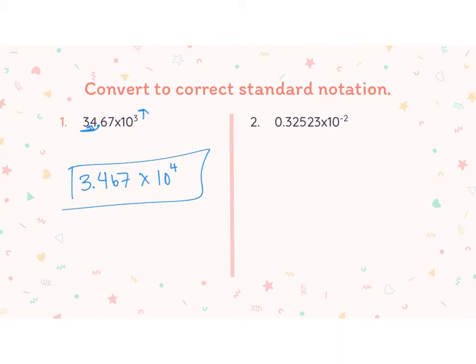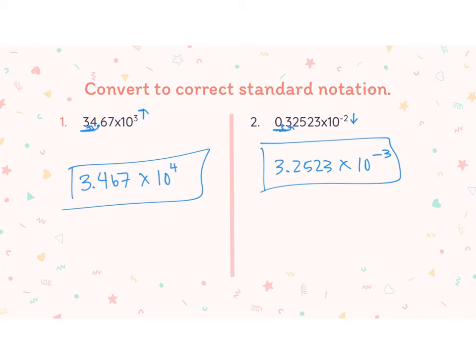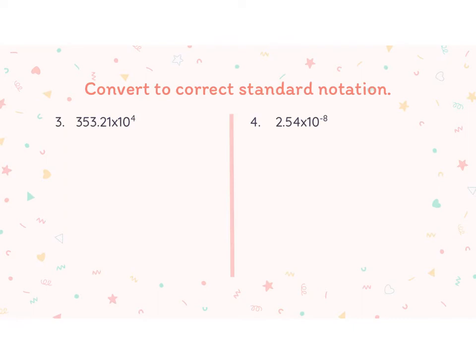In number two, I have no digits in front of the decimal point, so I need to move my decimal point forward one place. I actually made my number bigger — it was 0.3, now it's 3 — so I need to balance that by making my exponent smaller. So I'm going to have 3.2523 times 10 to the negative third power, taking that negative two exponent down one. In number three, I have 353.21 times 10 to the fourth — too many digits. I move my decimal point back two places, which means my exponent goes up two. So I get 3.5321 times 10 to the sixth power.